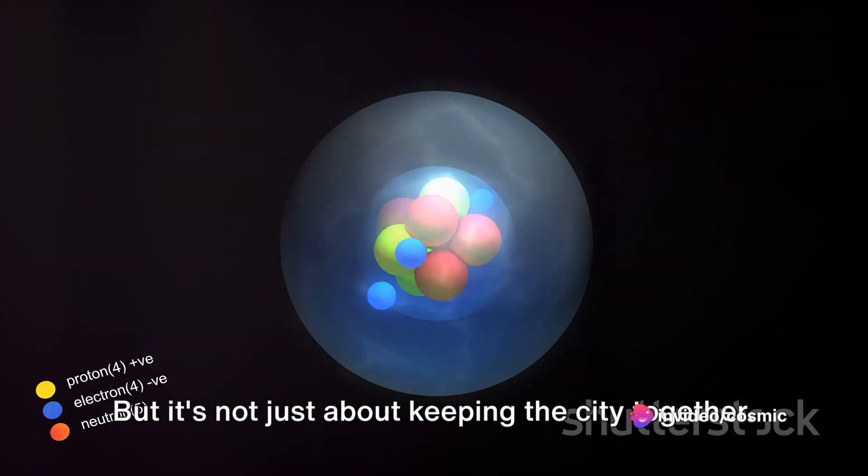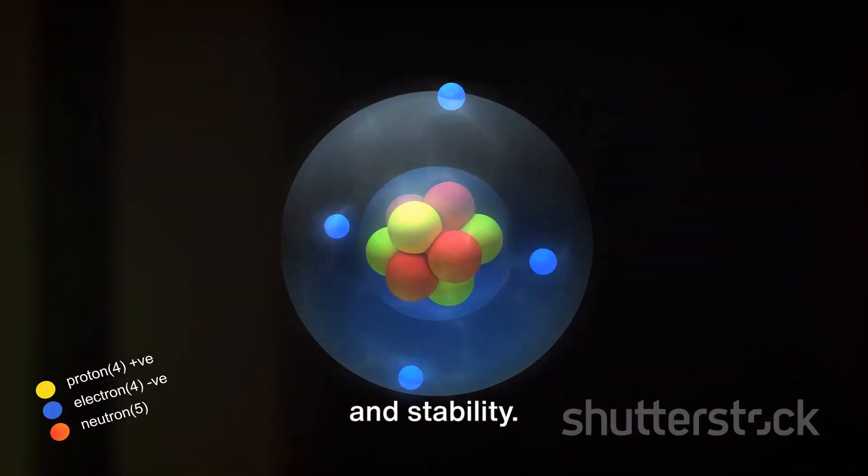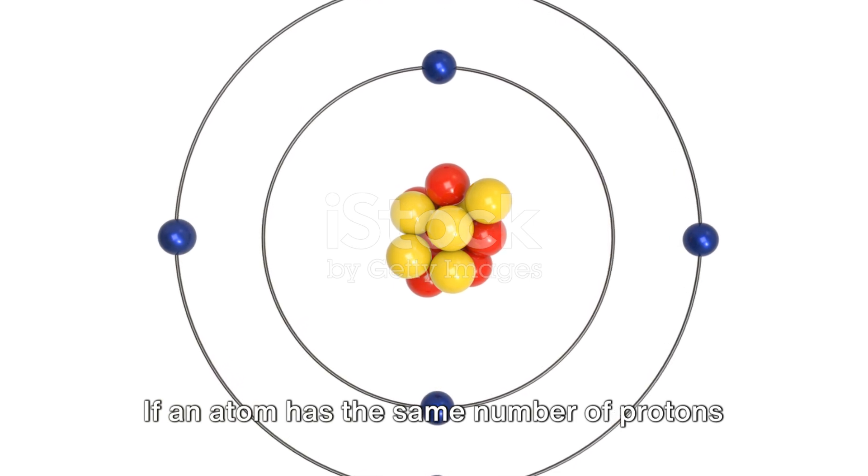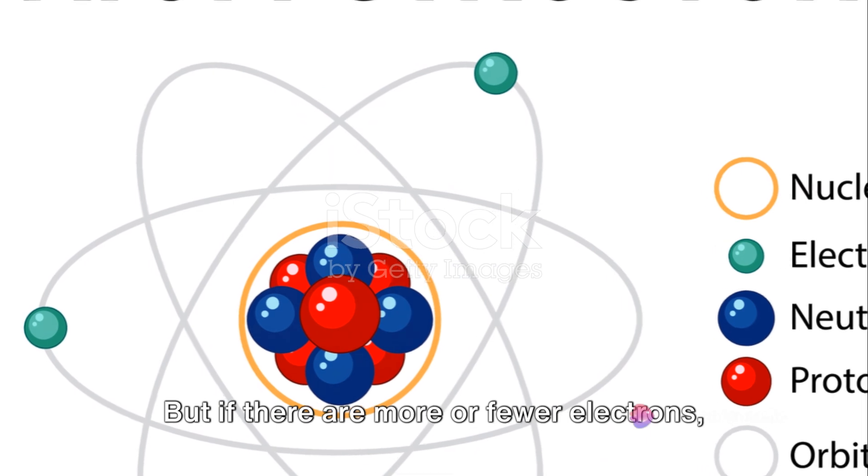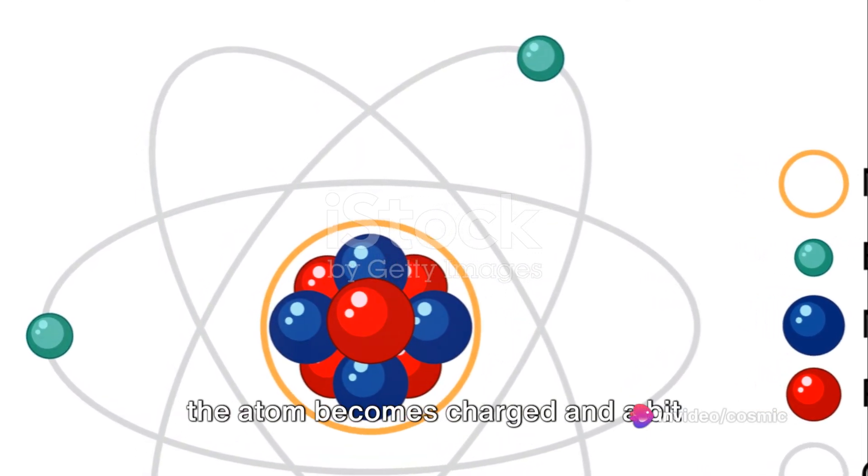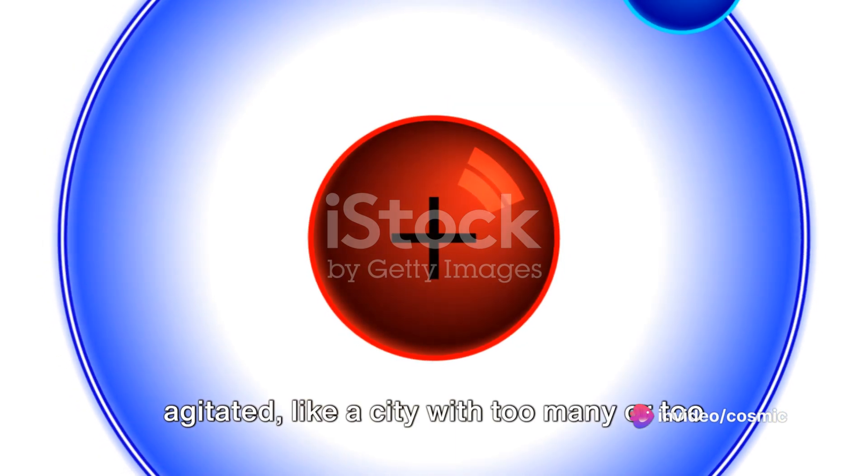But it's not just about keeping the city together. The protons also need to maintain peace and stability. If an atom has the same number of protons and electrons, it's balanced and happy. But if there are more or fewer electrons, the atom becomes charged and a bit agitated, like a city with too many or too few residents.